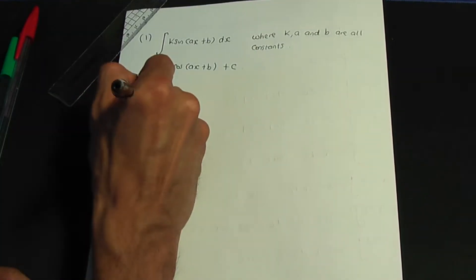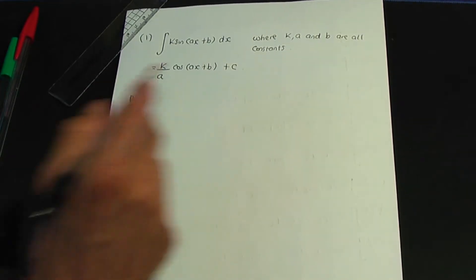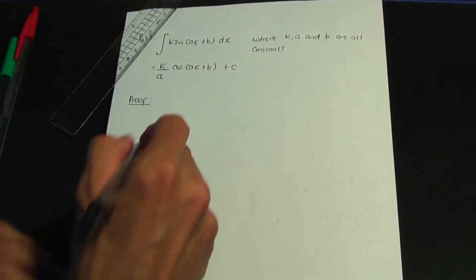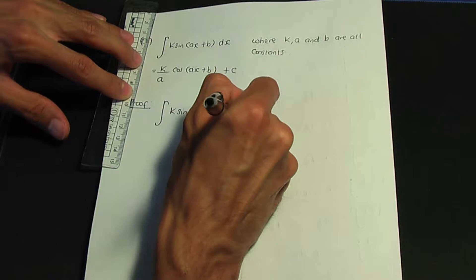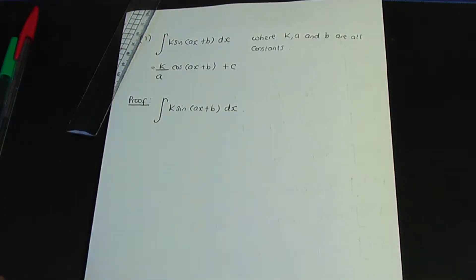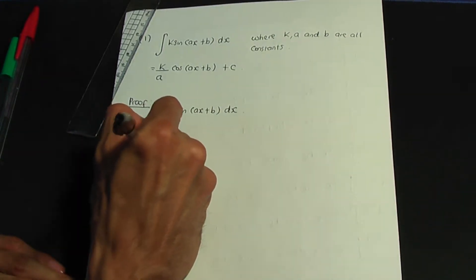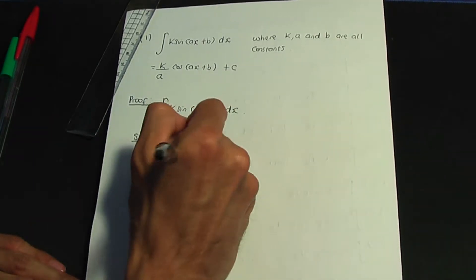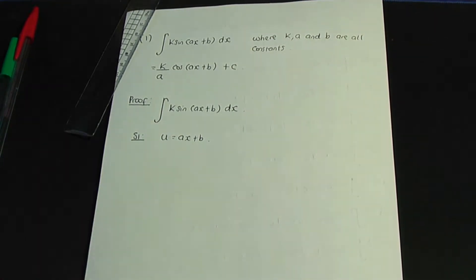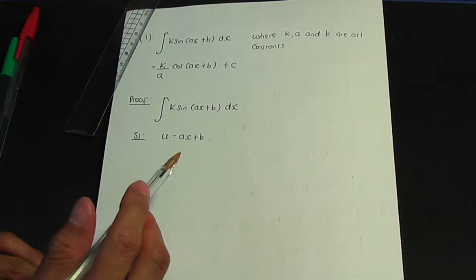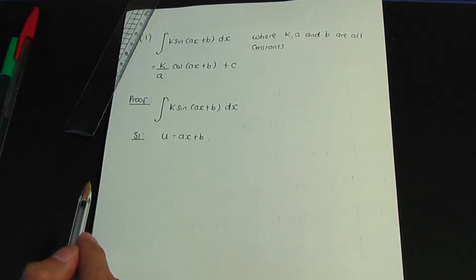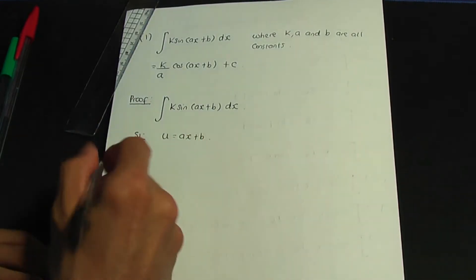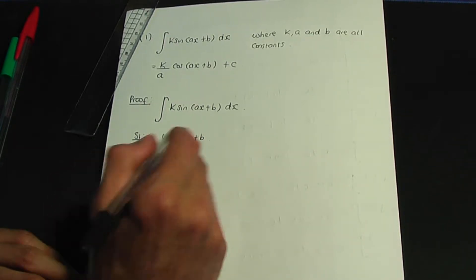Let me show you where this result comes from. We prove this result using substitution. So let me go over the proof. Let's take that integral: k sin(ax + b) with respect to x. In step one, the substitution we're going to use is u = ax + b. The idea of substitution is to replace the existing terms x and dx by new terms u and du.